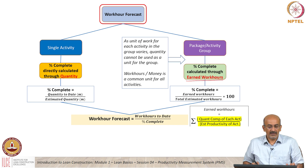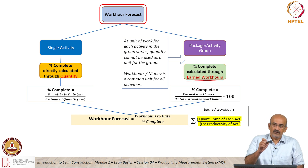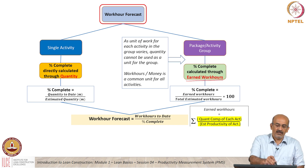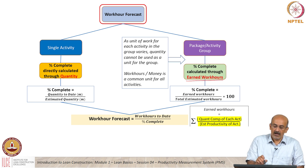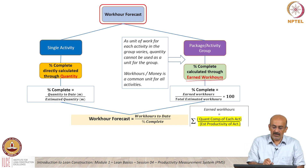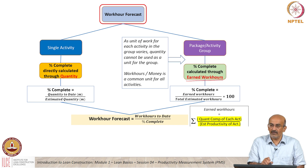When we take a single activity, the key is how you calculate percentage complete. For a single activity it is fairly straightforward — percentage complete is quantity to date divided by estimated quantity. We do a work hour forecast by taking work hours to date divided by percentage complete, which gives you the forecast of work hours. When I say work hour, it could be man hour, man day, crew hour, or crew day, but we are using the term work hour generically here.